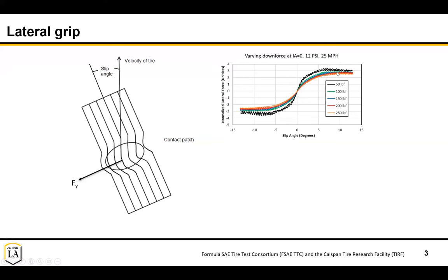More importantly, grip is highest when you have the lowest amount of downforce on each tire. This is one reason why it's critical - in the case of cornering - to not have all the force on just the left side or all on the right side. Having a big track width and a low center of gravity will help you achieve that.